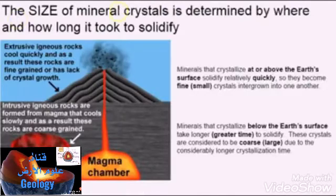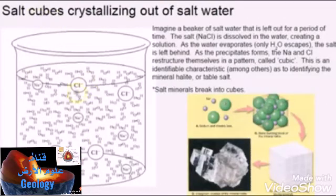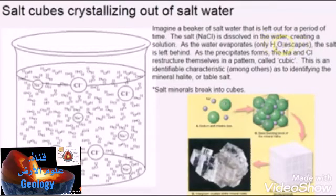The size of a mineral crystal is determined by where and how long it took to solidify. Minerals that crystallize at or above the earth's surface solidify relatively quickly, forming fine or small crystals. Minerals that form at depth take longer and are considered coarse or large due to considerably longer crystallization time. In a beaker of salt water left out over time, as the water evaporates, only H₂O escapes; the salt is left behind, and the Na and Cl restructure themselves into a cubic pattern.